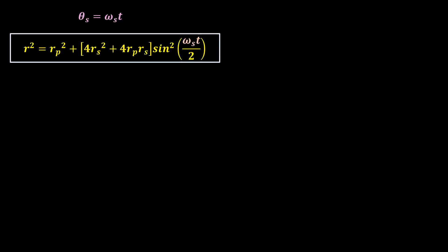Writing theta s in terms of angular velocity of the sun yields this. Now, what does Newton's law of universal gravitation state?